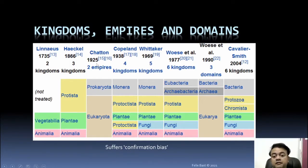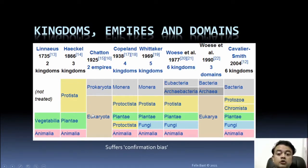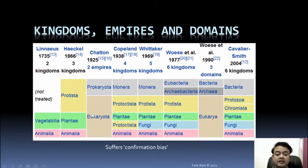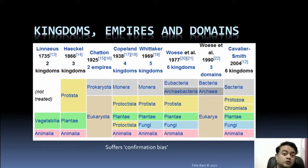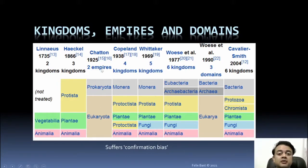By Chatton in 1925 — almost one century back — it became two empires: Prokaryota and Eukaryota, which is still accurate even today. Broadly we can say life is of two types: prokaryotes and eukaryotes. Chatton's two-empire system was later revisited by Woese.